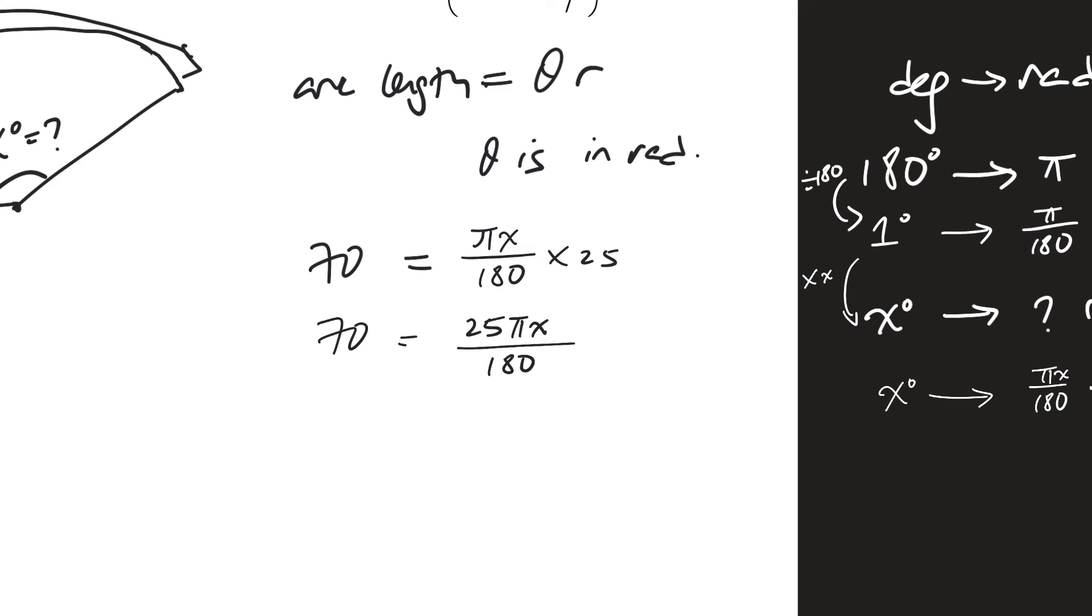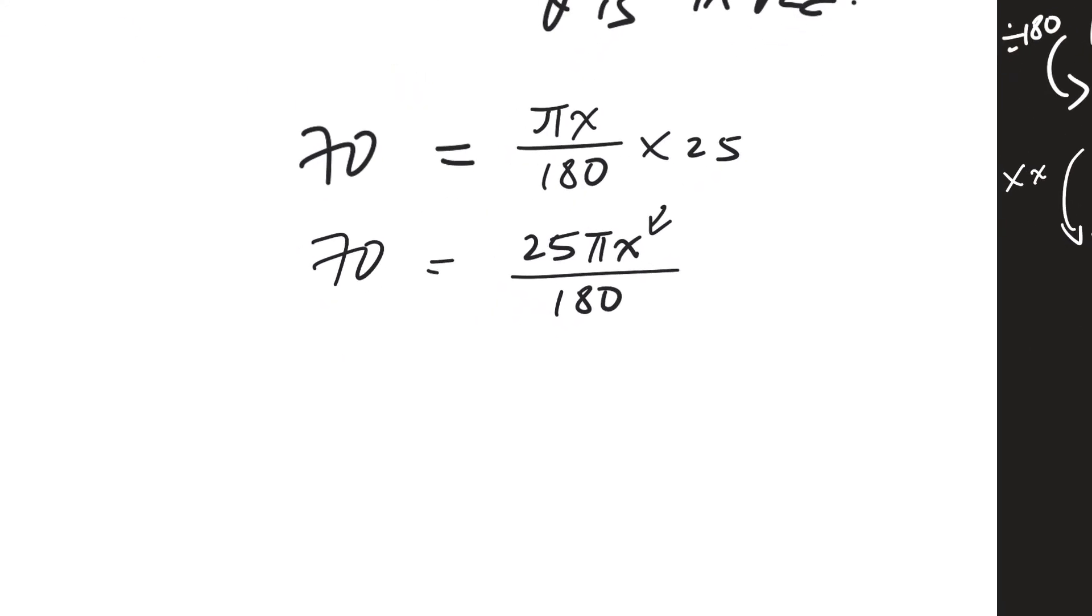Good, I can find x now. Can you see? I can find x now. Everything else is solved, pi is simply a number. So let me just multiply 70 by 180. And what I get is 12600 equals to 25 pi x.